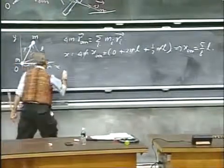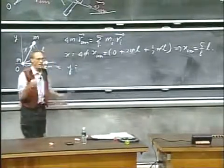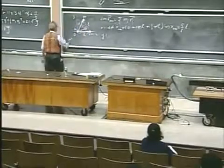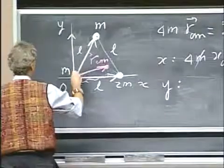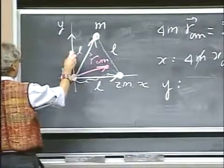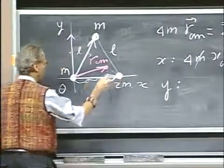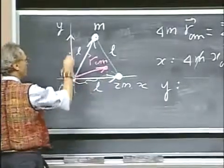Now, in the y direction, you can do exactly the same. You can split it up into the position vector of this object, which is one-half l square root three. This one has no y component, and this one has no y component. So this is very easy.